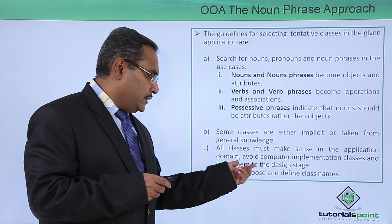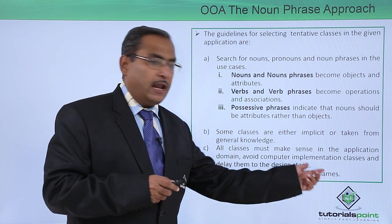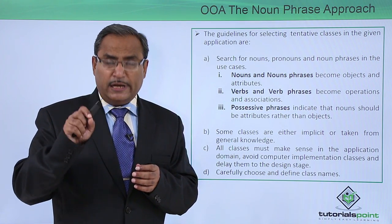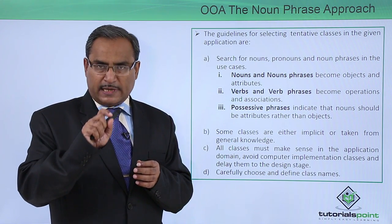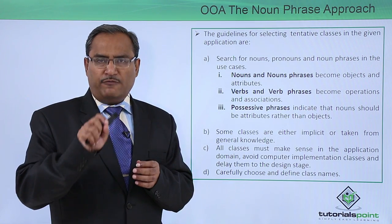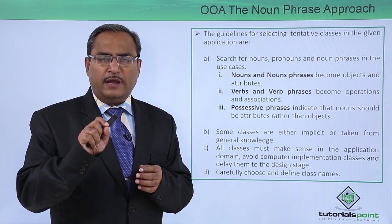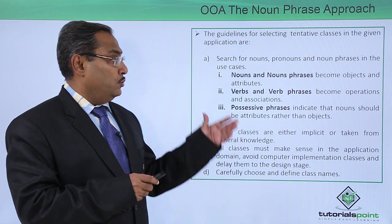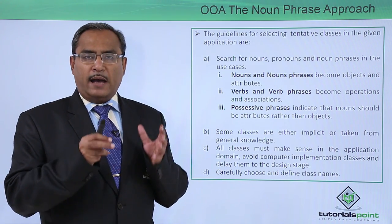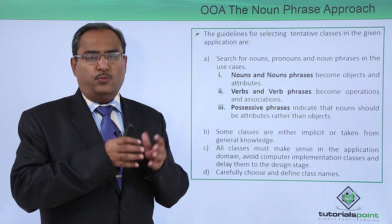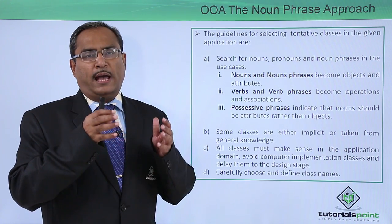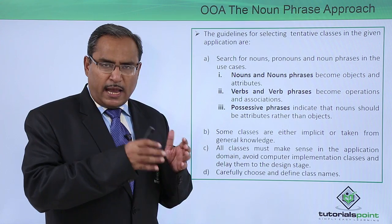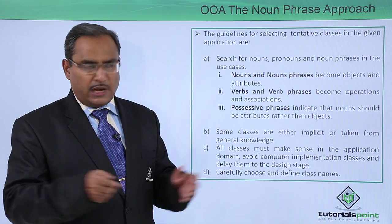Carefully choose and define class names. The class name and nomenclature should be done very precisely and carefully, so that from the name alone we get the idea of what the purpose of the class is. This is the way to have our methods, attributes, class names, and the respective associations between classes.